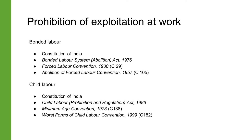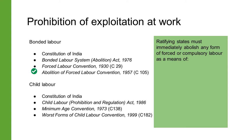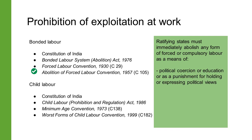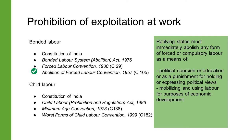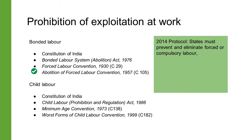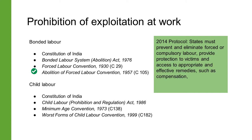The Abolition of Forced Labor Convention 1957, which is Convention 105 of the ILO, requires ratifying states to immediately abolish any form of forced or compulsory labor used as a means of political coercion or education, as punishment for holding or expressing political views, as a method of mobilizing labor for economic development, as a means of labor discipline or for participating in strikes, or as a means of racial, social, national or religious discrimination. The 2014 Protocol to the Forced Labor Convention requires member states to take effective measures to prevent and eliminate forced labor, provide protection and remedies such as compensation to victims, and sanction perpetrators.